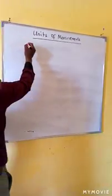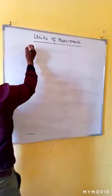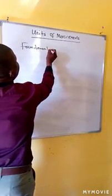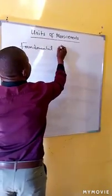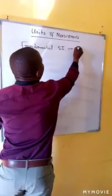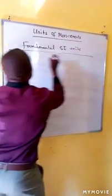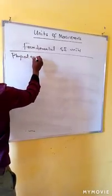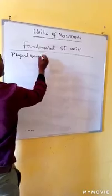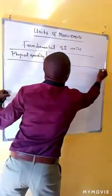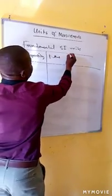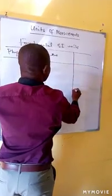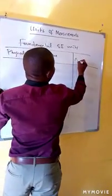We can now look at fundamental SI units. The table has columns for physical quantity, name of unit, and abbreviation.